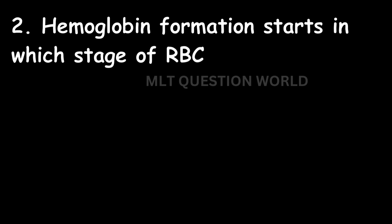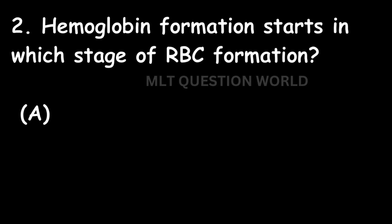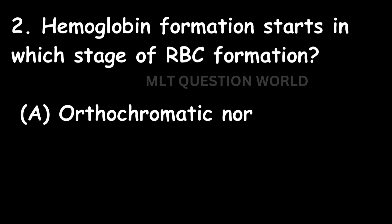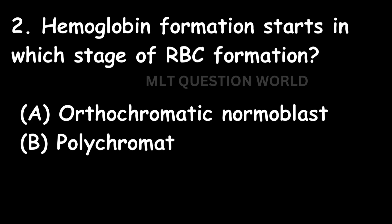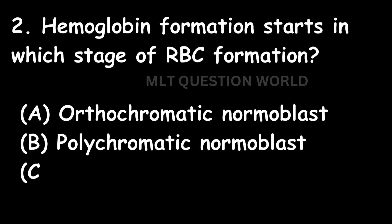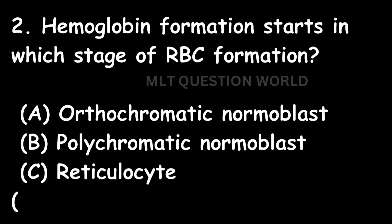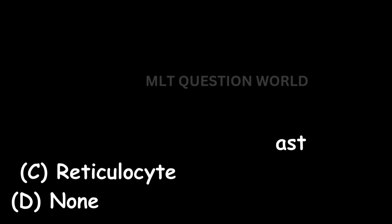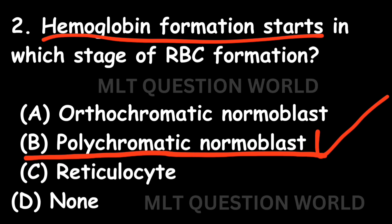Next question: Hemoglobin formation starts in which stage of RBC formation? Option A: Orthochromatic normoblast. Option B: Polychromatic normoblast. Option C: Reticulocyte. Option D: None of the above. The right answer is Option B: Polychromatic normoblast. Hemoglobin formation in erythropoiesis starts at the polychromatic normoblastic stage. We will study hematopoiesis in detail in upcoming classes.